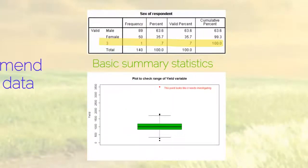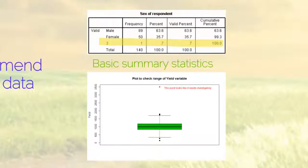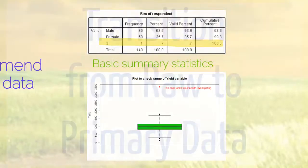Once the data has been entered you can run further checks by producing simple frequency tables, cross tabulations and summaries. For numeric variables such as yield, examining statistics such as the minimum and maximum and plotting the data can be a very useful method of identifying incorrect values or outliers.